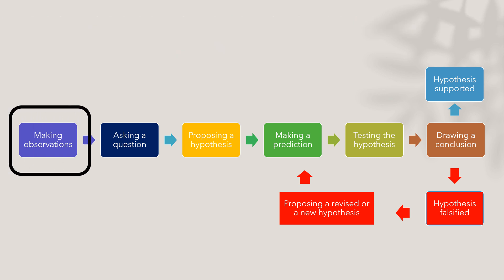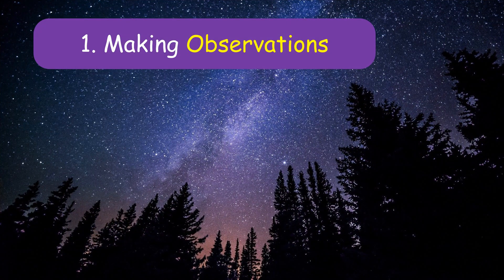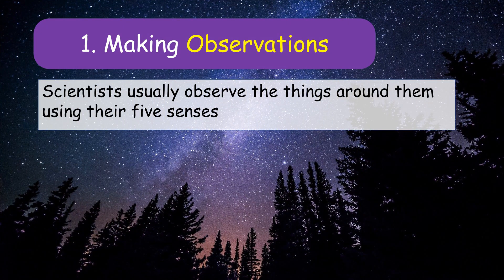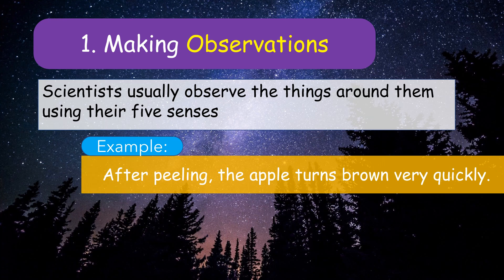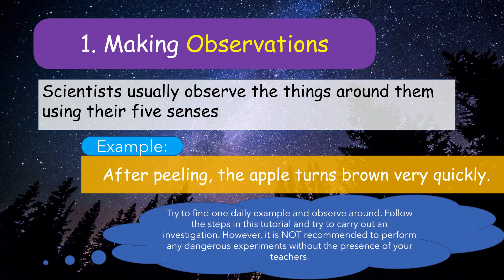Let's first have a look at making observations. Scientists usually observe the things around them using the five senses. One example of making observations is that after peeling, the apple turns brown very quickly. Try to find one daily example and observe around. Follow the steps in this tutorial and try to carry out an investigation. It is not recommended to perform any dangerous experiments without the presence of your teachers.